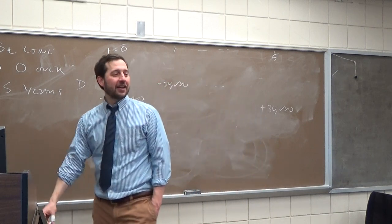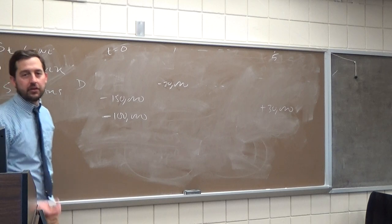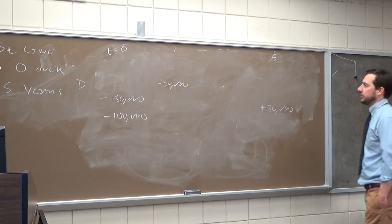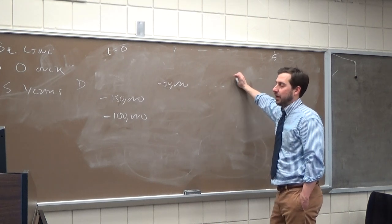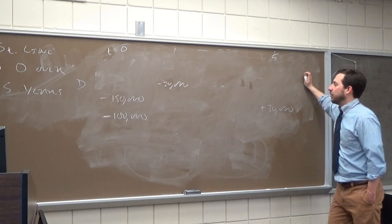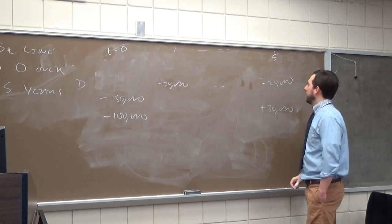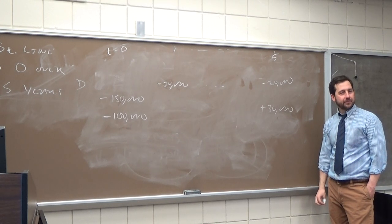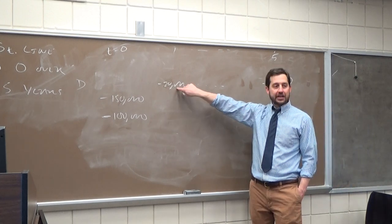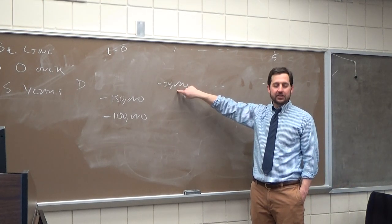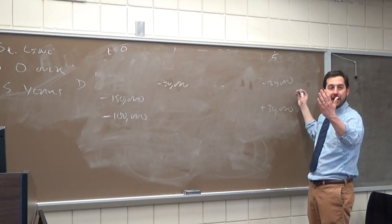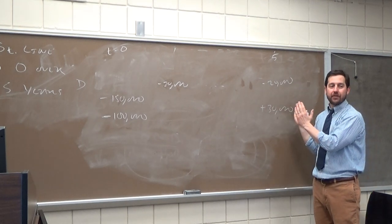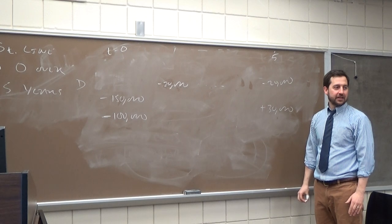Depreciation affects operating cash flow because it lowers our taxable income and therefore our taxes. We include it because it's in the operating cash flow equation — it acts as a tax shield. Now, in year five when we include that final $20,000 depreciation and then sell the machine for $30,000, do we keep the entire $30,000? The IRS says we've used a tax shield on the full $100,000, but the machine only effectively cost us $70,000, so we've over-sheltered.